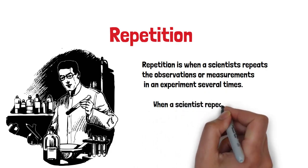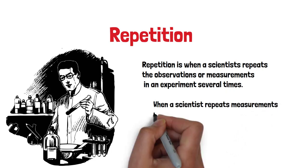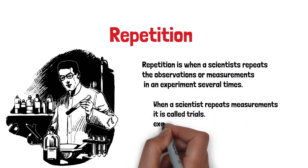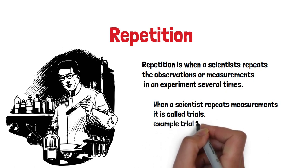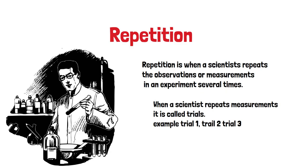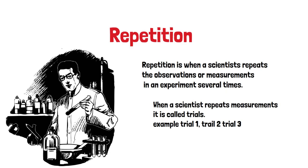Each time the scientist records data for an observation or measurement, it is called a trial. For example, if he records data from an observation or measurement, that would be called trial one. If he repeats the same observation and measurement and records that data, that will be called trial two. He will continue and get trial three, trial four, trial five, and so on.